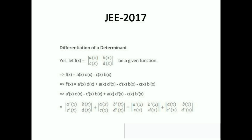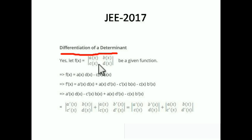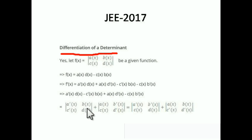Now a very important and frequently asked topic: differentiation of a determinant. You can differentiate a determinant by two methods — either by the row or by the column. For a 2×2 determinant f(x) = |a(x) b(x); c(x) d(x)|, differentiate by column: first take the differentiation of the first column — a'(x), c'(x) — with the second column steady, plus the second column's differentiation — b'(x), d'(x) — with the first column steady.